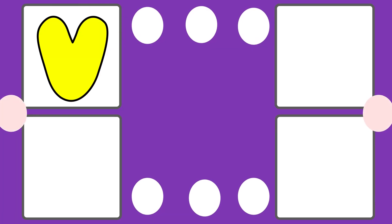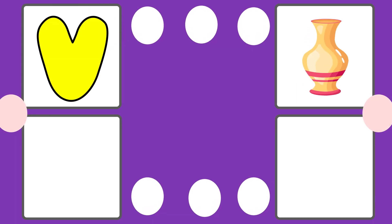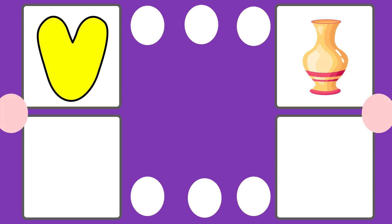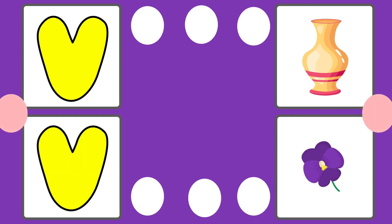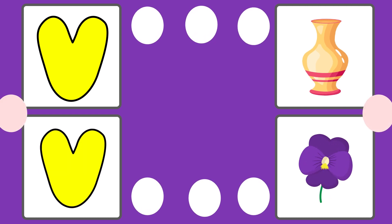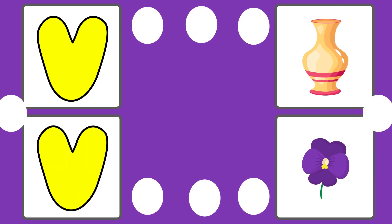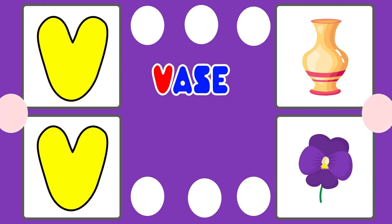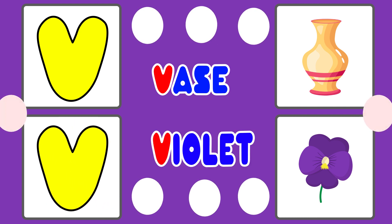V is for Vase. V-V-Vase. V is for Violet. V-V-Violet. V is for Vase. V is for Violet.